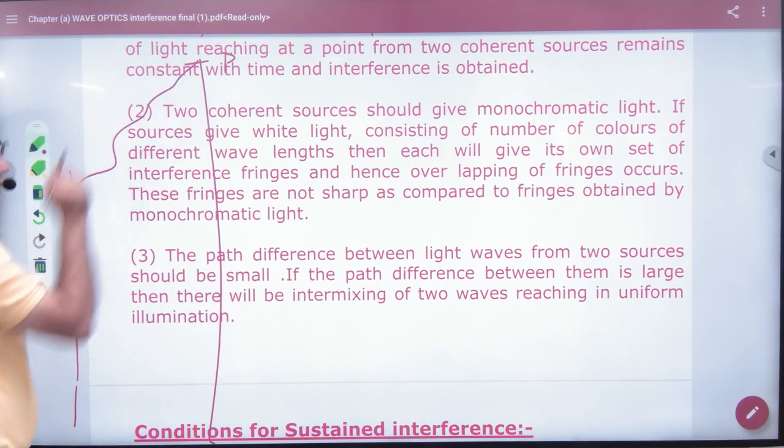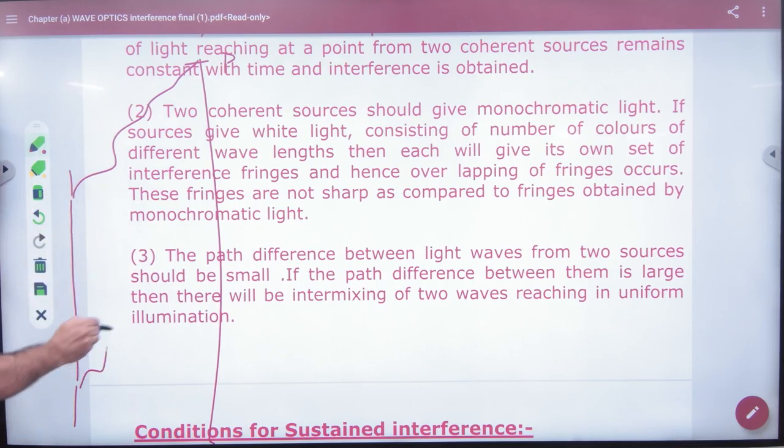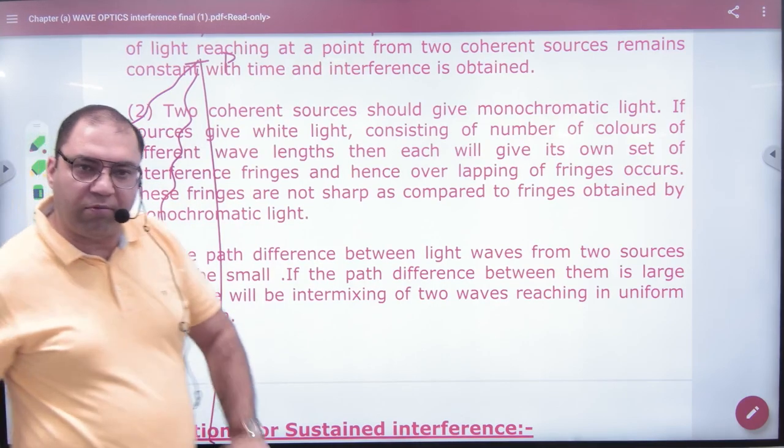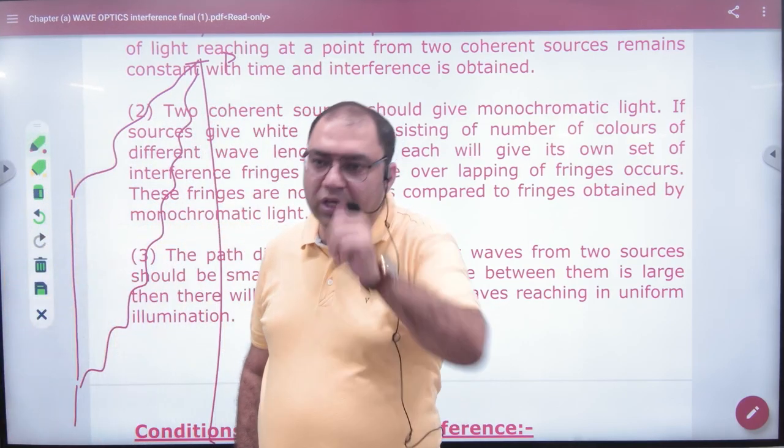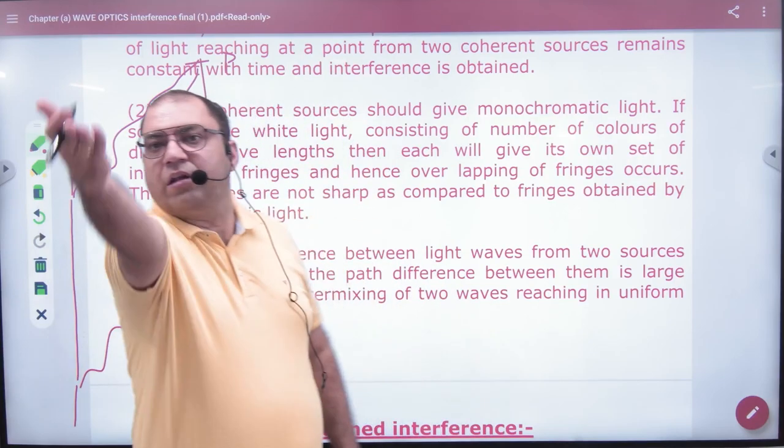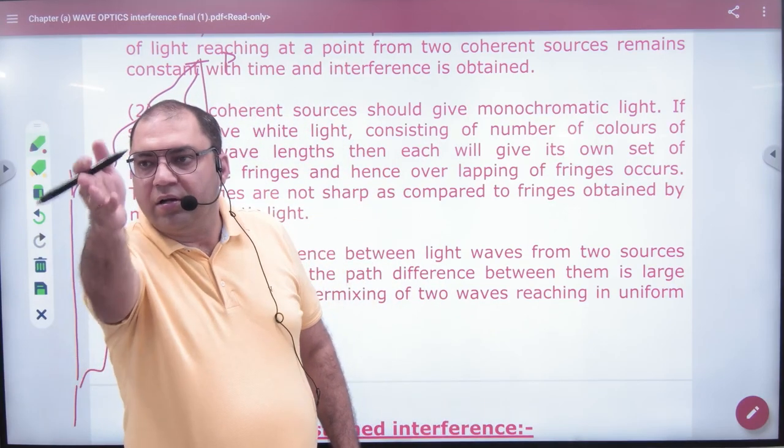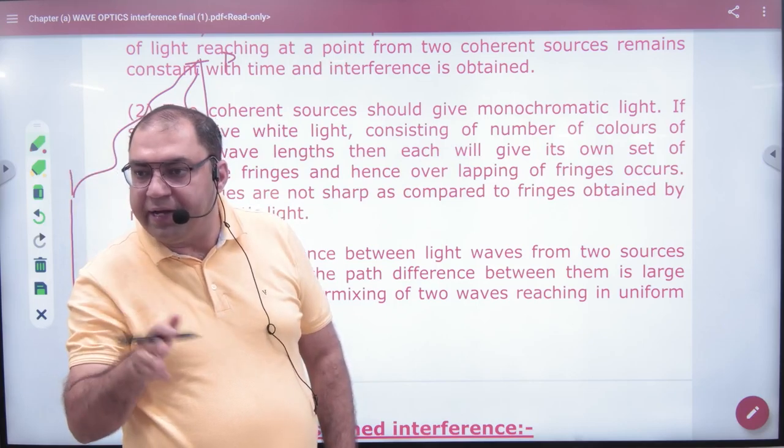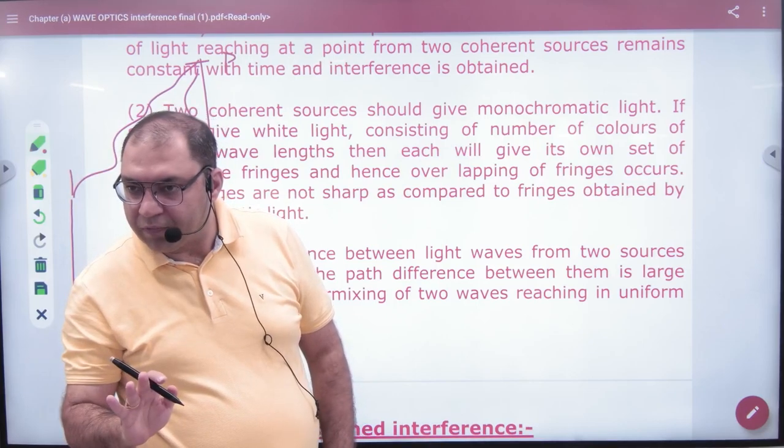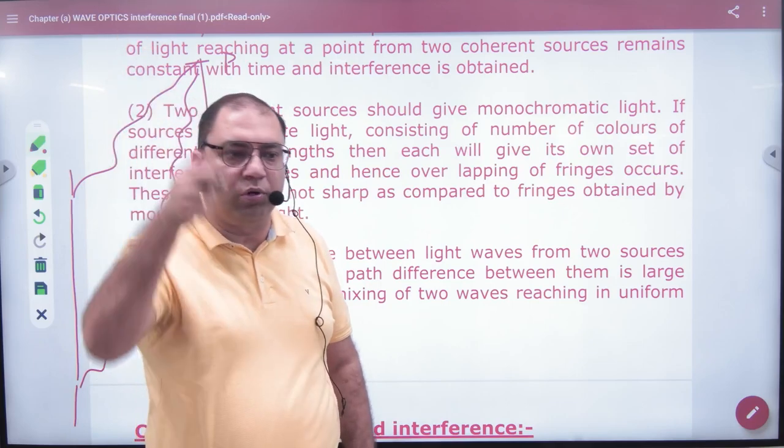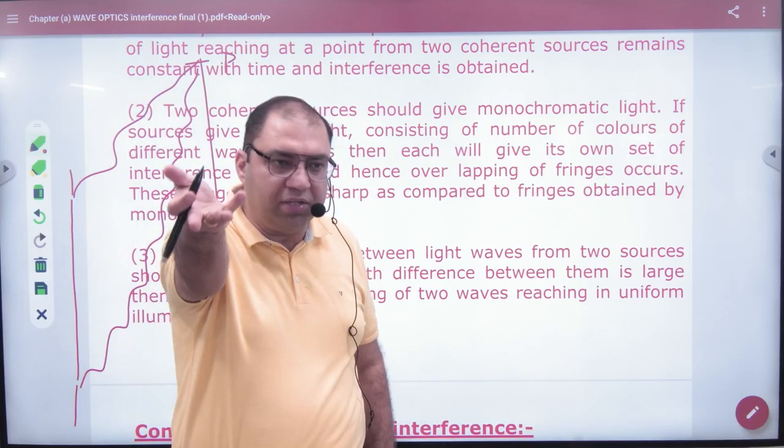This wave has reached here. The path difference is the path to reach the point. Now, what is the problem of the distance? Light will not reach there. So if the path is so long, even with the laser, then the distant light will be weak, the intensity of light will be weak. It is not that you will be far away and the intensity will be equal. The intensity will decrease.